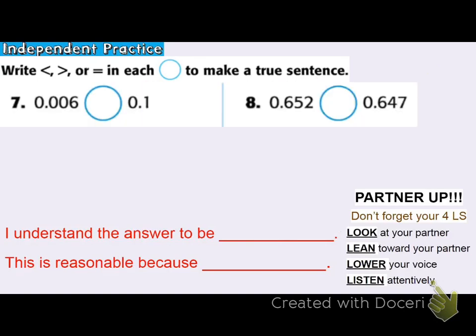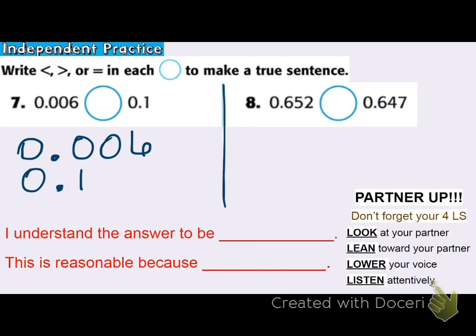Still in independent practice. I'm going to compare and choose to line up the decimals. I could choose a number line, but I'll go ahead and line up those decimals. I'll fill with zeros so they have the same number of digits, then look at the greatest place value for step two. I can see that 1 tenth is larger than 0 tenths, so 1 tenth is the greater value — it's bigger than 6 thousandths.